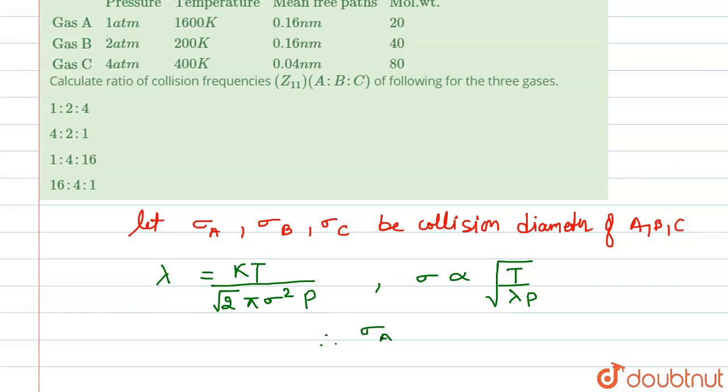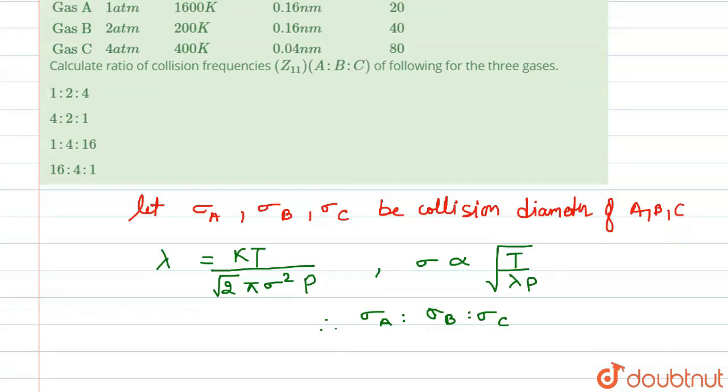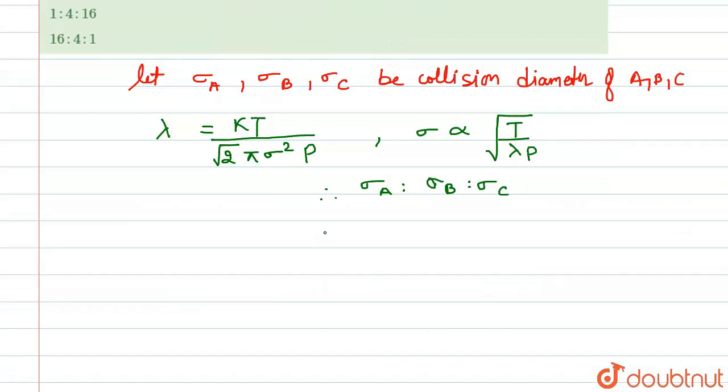Therefore, σ_A : σ_B : σ_C, we can write from this equation as under root of the value of temperature given in the question for A, which is 1600 divided by the value of lambda 0.16 into pressure 1.